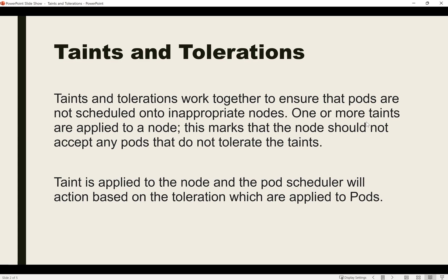Taints and tolerations are used to manage pod scheduling on nodes. Taints are key-value pairs applied on the node, while tolerations are applied at the container level during deployment of pods. If there is a matching toleration applied on a pod, then that pod can be scheduled on a node with a taint. Simply put, pods can be scheduled on a tainted node only when they have a matching toleration assigned.